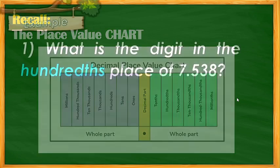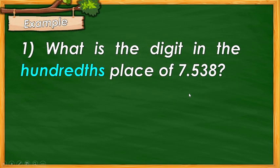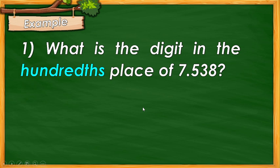Let's have some examples to further analyze how to determine the digit using the place value. Example number 1: What is the digit in the hundredths place of 7 and 500 thirty-eight thousandths? We're going to identify the digit in the hundredths place. Focusing on the decimal part, because it ends with thousandths.